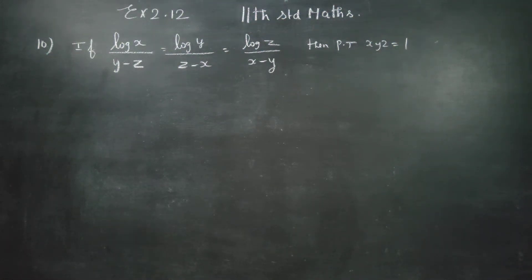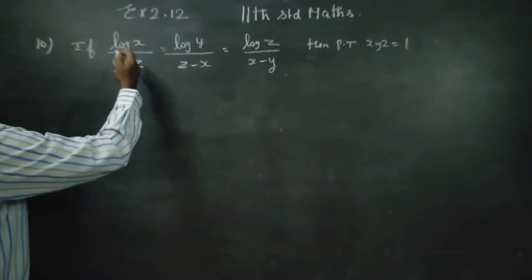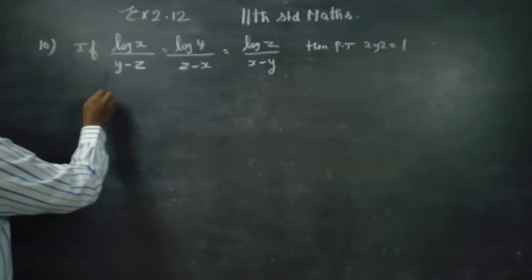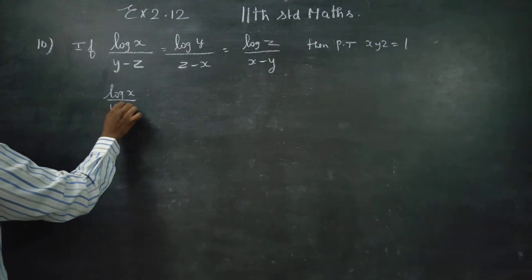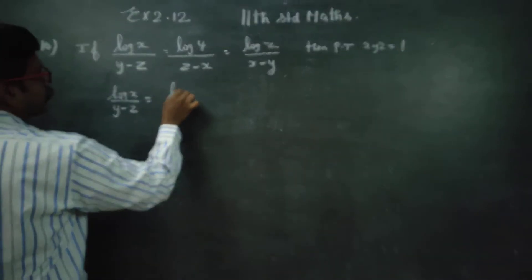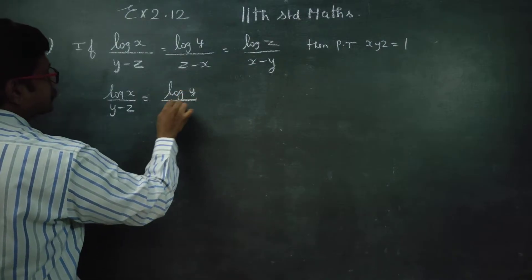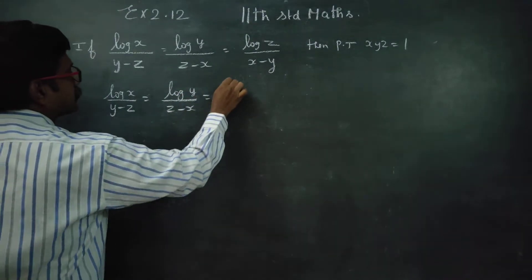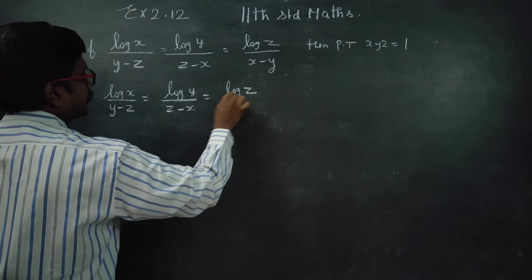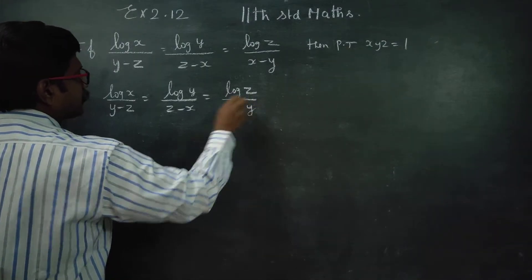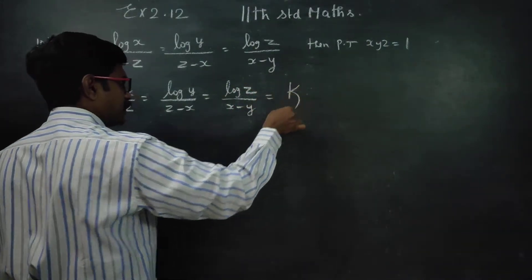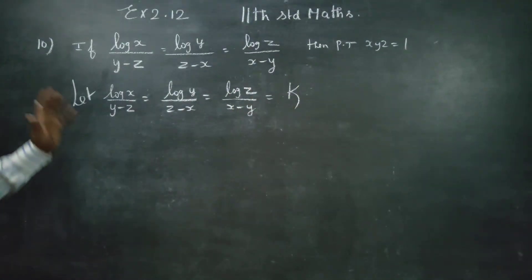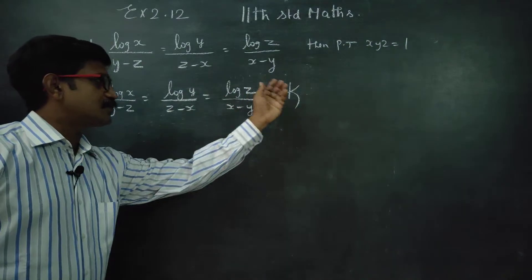Hello 11th grade students. In sum number 10, exercise 2.12, it is given these three terms are equal: log x by (y minus z) is equal to log y by (z minus x) is equal to log z by (x minus y). I am going to assume that each of these is equal to k.